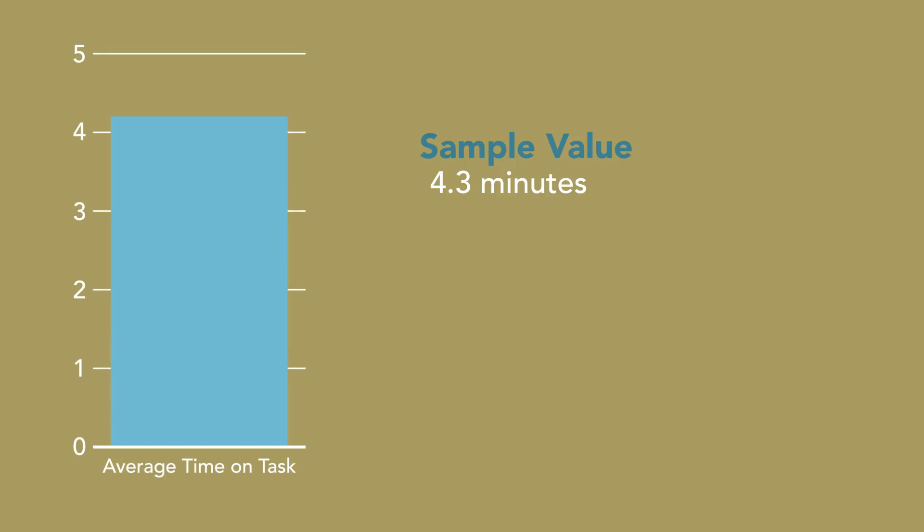Here's that same 4.3 minutes shown as a bar chart. I could just go ahead and report that sample value, that 4.3. But let's think about this for a minute. Remember that we took the sample because we can't test the whole population. We want to use the sample to estimate the value that we might see if we could test the whole population. So, is it likely that we just happened to get the same exact value with our sample that we would see in our population? No, it isn't likely.